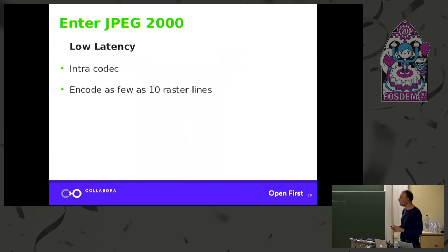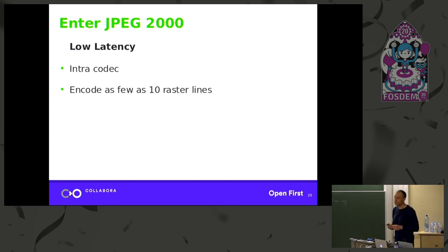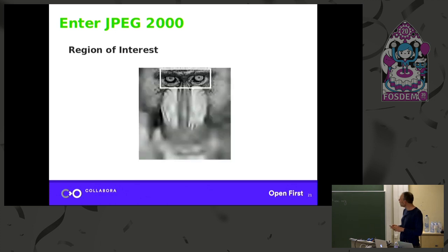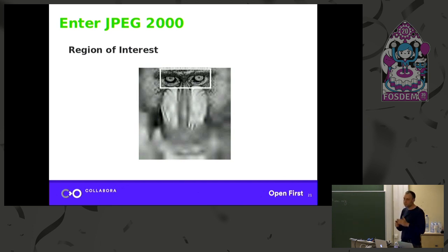JPEG 2000 also provides low latency because it's an intra-codec — each frame is encoded individually, unlike H.264 where you have groups of pictures encoded together. And there's a region of interest feature where you increase quality in a certain part of the image — for example, in video conferencing you might want to focus on the face.